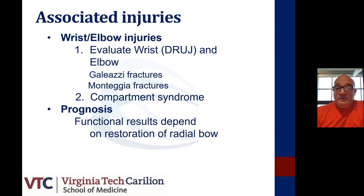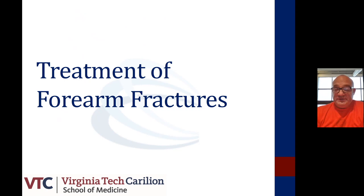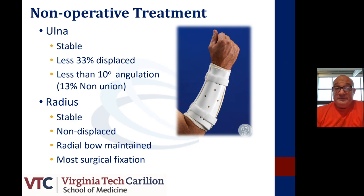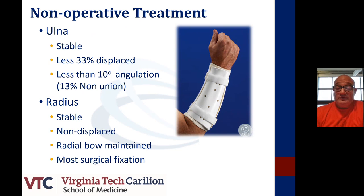Prognosis in forearm fractures depends on restoration of the radial bow. Treatment varies from surgical to non-surgical. The ulna tends to be treated non-surgically when it is a nightstick fracture — but it must be stable, displaced less than 33%, and angulated less than 10 degrees. It's important to note that these fractures take a long time to heal, and the literature reports about a 13% non-union rate, specifically in the distal segment portion, when you have a single ulna fracture.